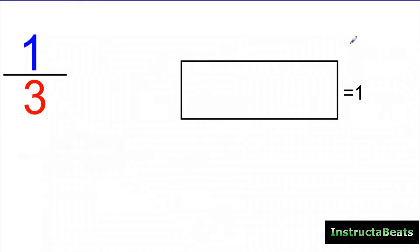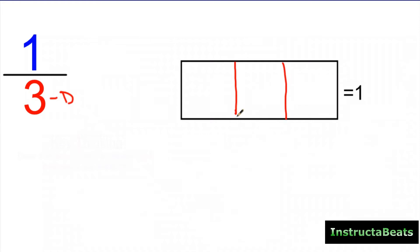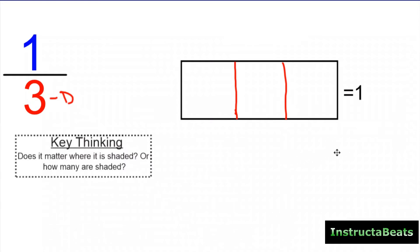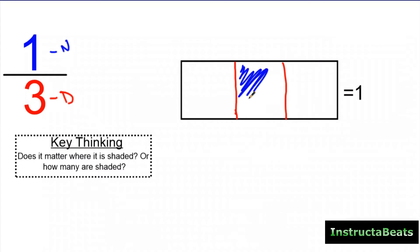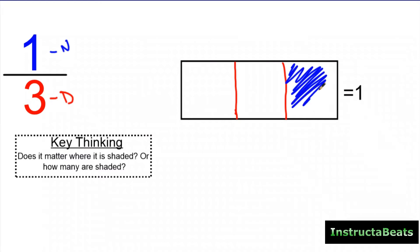Here we want to represent one third. I have what some people call a Hershey bar, some people call it a tape diagram, some people just call it an area model. This is equal to one whole, just like 221 — this rectangle represents one. My denominator tells me I want to split this into three equal groups. I'm going to do my best. Here's a key thought: does it matter where it's shaded, or does it matter how many are shaded? My numerator is one, which means I need to shade one piece. If I shade it here, that's one third. If I shade in the middle, this is still one third. If I shade it over here, this is also one third. It doesn't matter which part is shaded — it just matters how many of the parts are shaded.